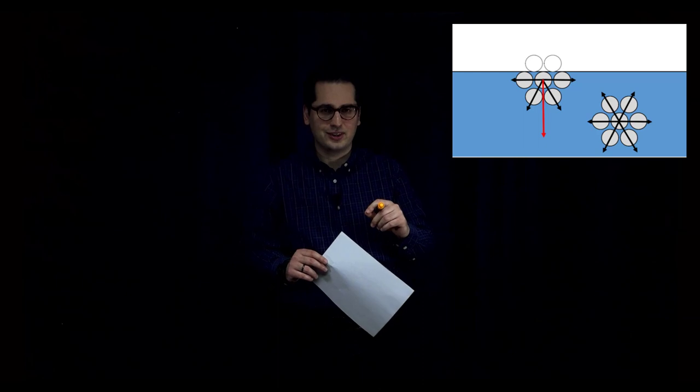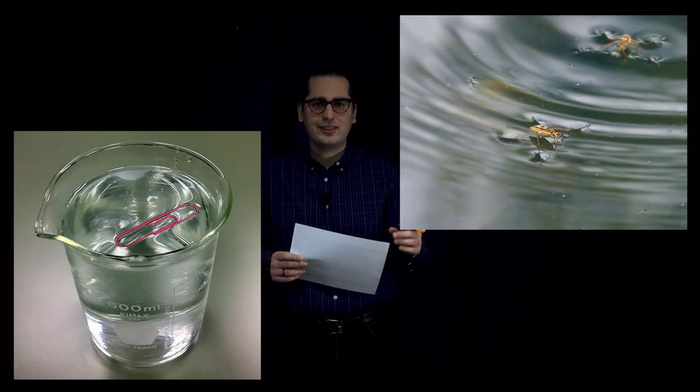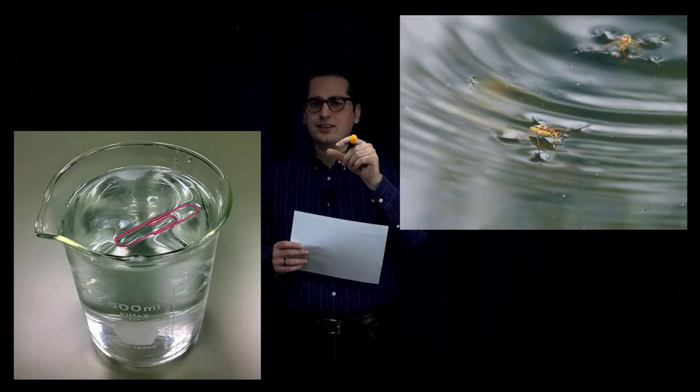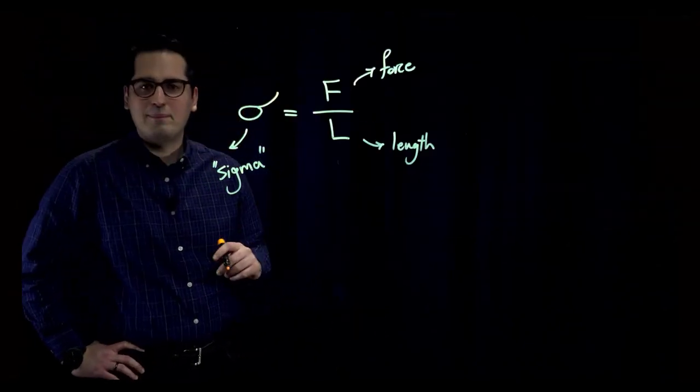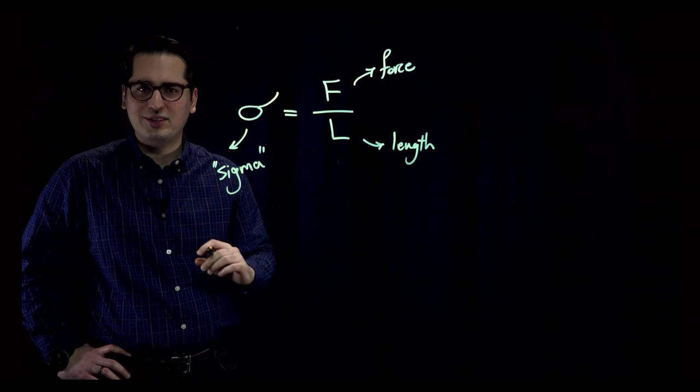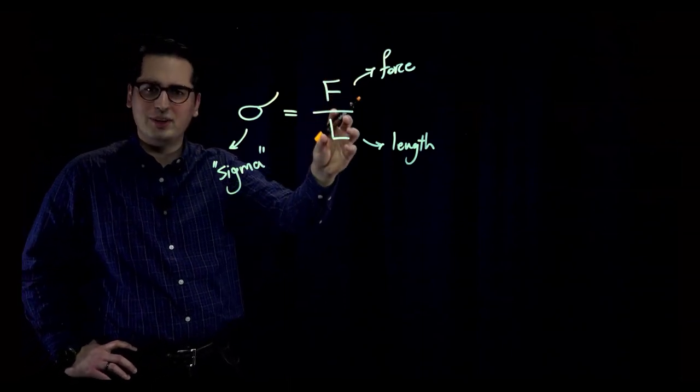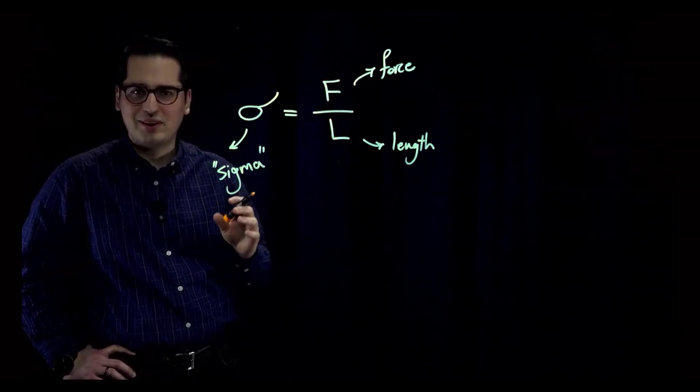In this short video we are going to talk about surface tension at an interface between different fluids. The top layer of molecules is in tension and that creates a skin or a membrane. The strength of that membrane is called surface tension. Surface tension is the reason that a small fly and a needle can stay on top of water without sinking down.